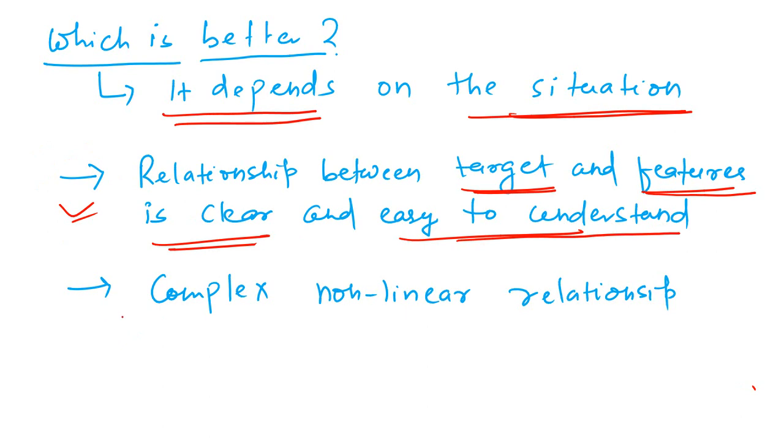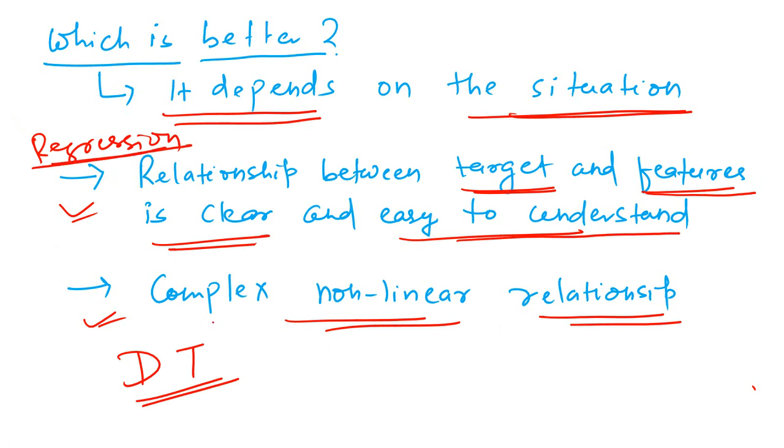But if the situation is slightly more complex and there exists complex nonlinear relationship, the linear regression models may not be very suitable. In such a case, one should go for decision tree or any other tree based model. So regression when relationship is more or less clear. If relationship is not very clear and there seems to be some sort of nonlinear relationship, then it is good to go with tree based model such as decision tree. So that is the thumb rule.